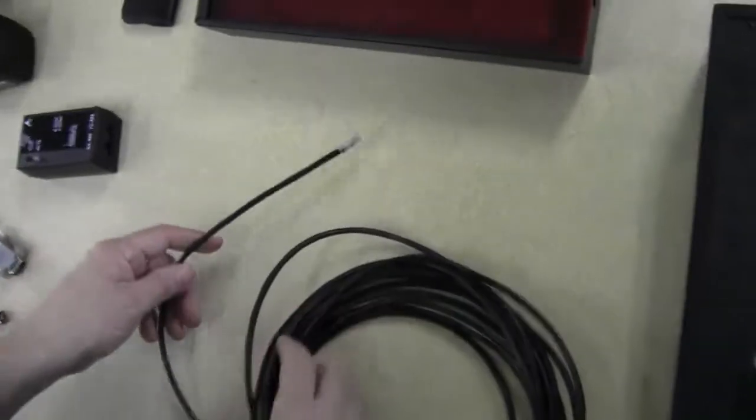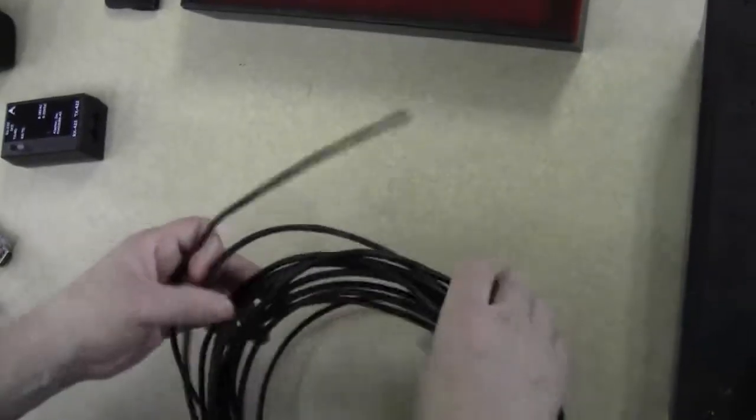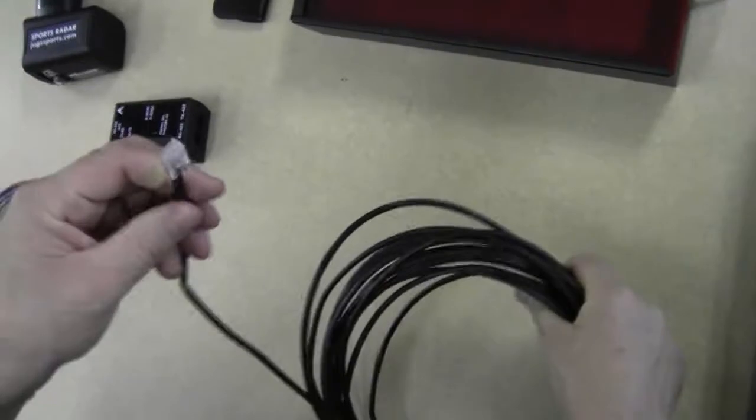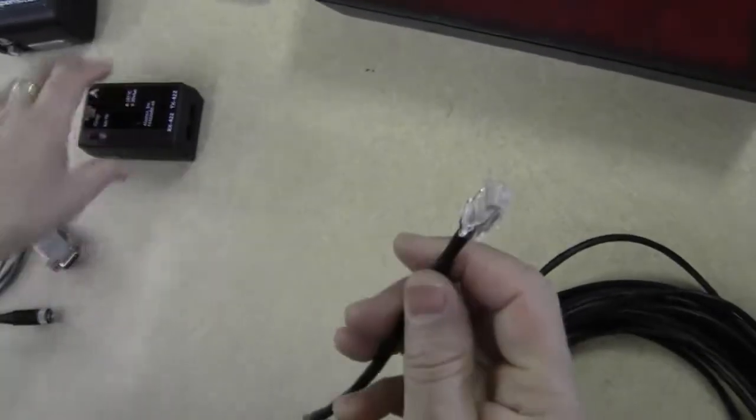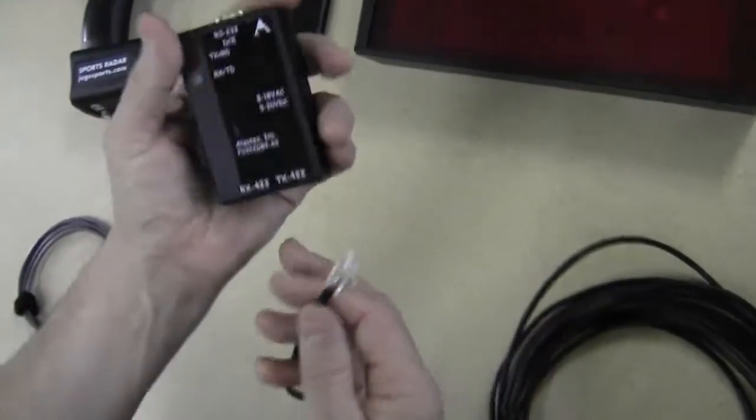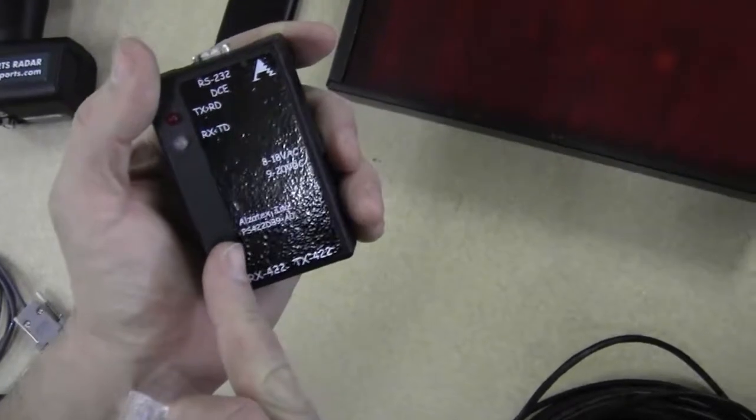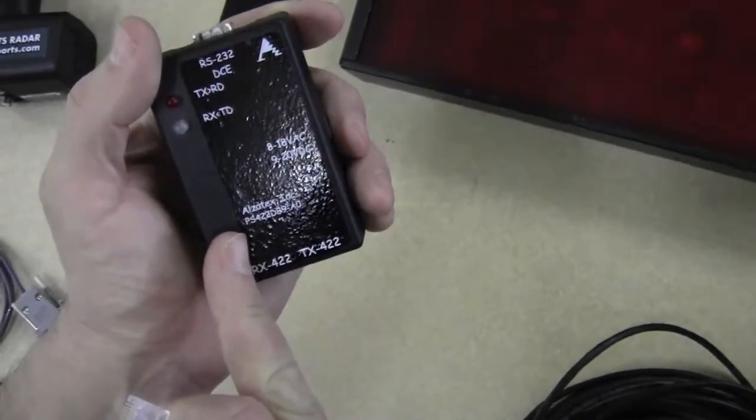So we're going to plug this in, push it down until it snaps. And then we're going to connect this CAT5 cable, which has a CAT5 connector on the end, to a PS422 DB9 interface adapter.